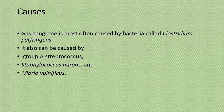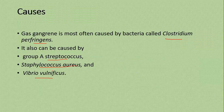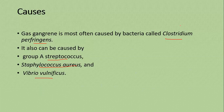The main cause of gas gangrene is Clostridium perfringens — the primary responsible bacteria for causing this infection. It can also be caused by Group A Streptococcal bacteria, Staphylococcus aureus, and Vibrio vulnificus. However, it is mostly caused by Clostridium perfringens.